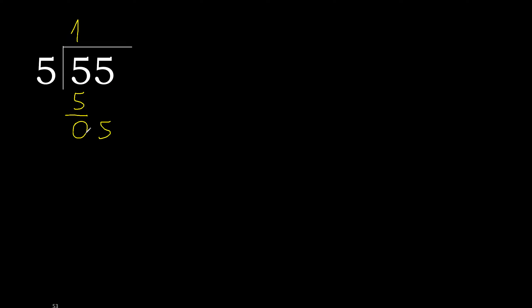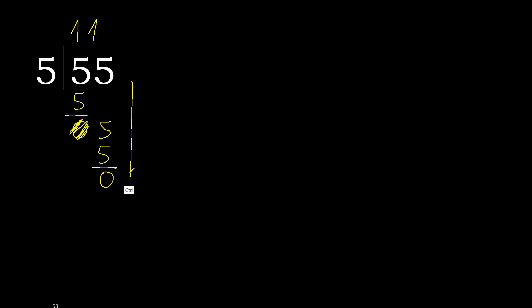Next. Bring down — eliminate 0 on this side. 5. 5 multiplied by 1 is 5, it is not greater. 5 minus 5 is 0. Next. That is not a number, and here is 0. Therefore, finish it.